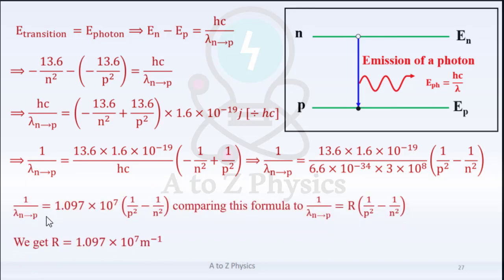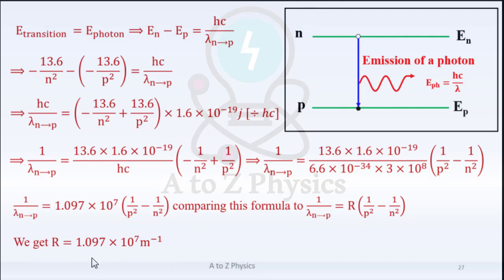Replacing H and C and performing the calculation, we get: 1/lambda = 1.097×10⁷ × (1/P² − 1/N²). Comparing this formula to 1/lambda = R × (1/P² − 1/N²), we get R = 1.097×10⁷ m⁻¹.